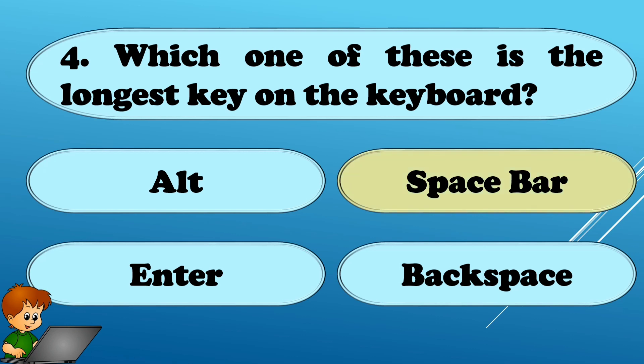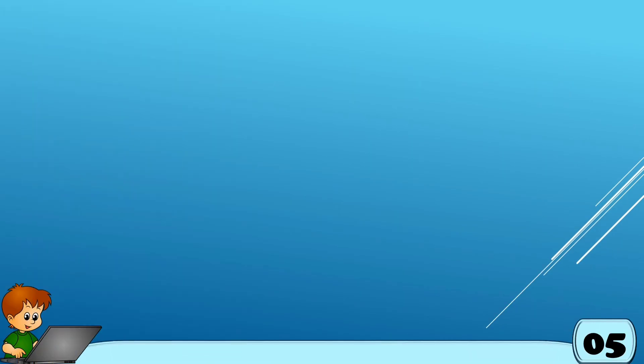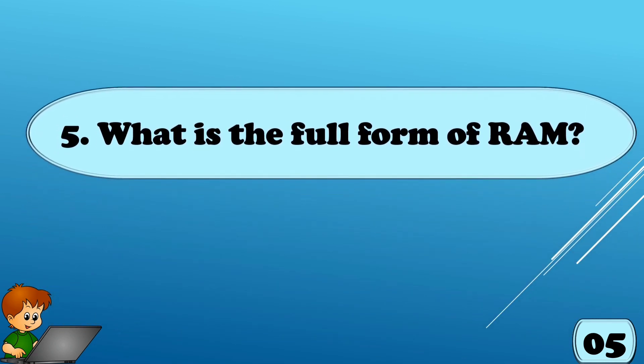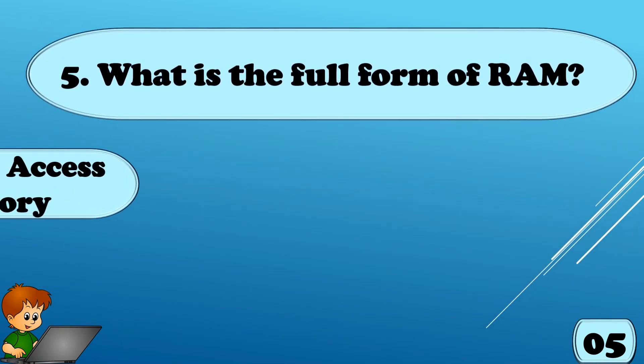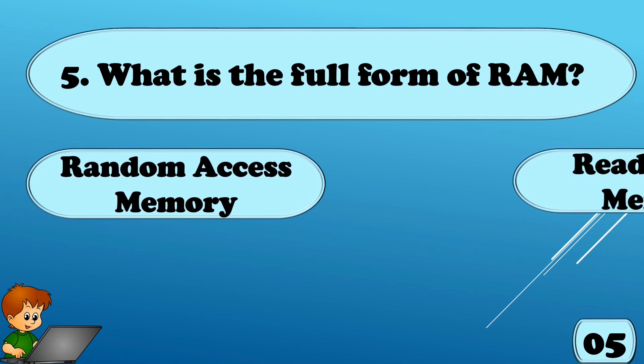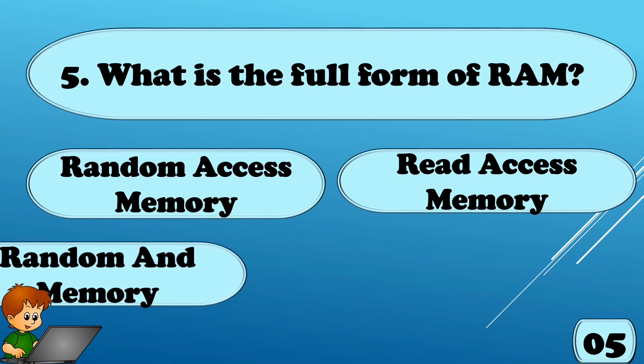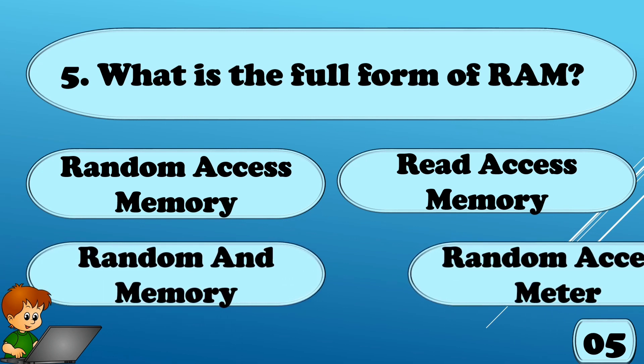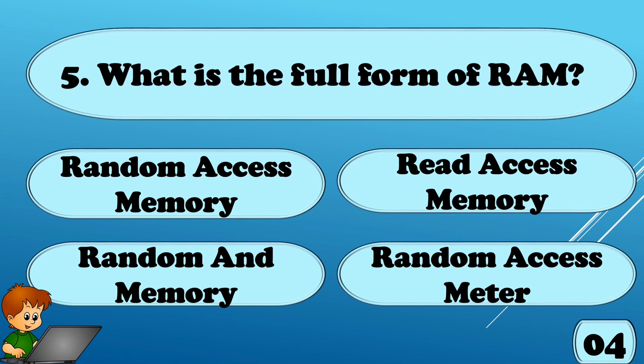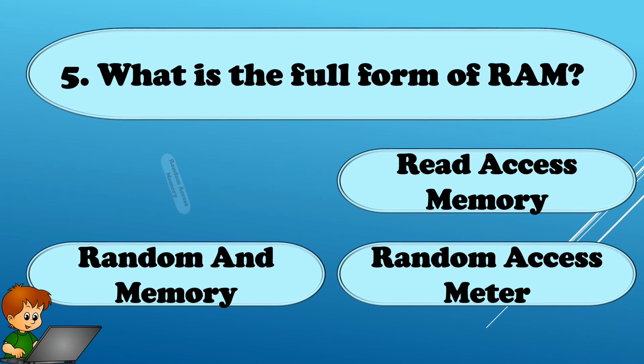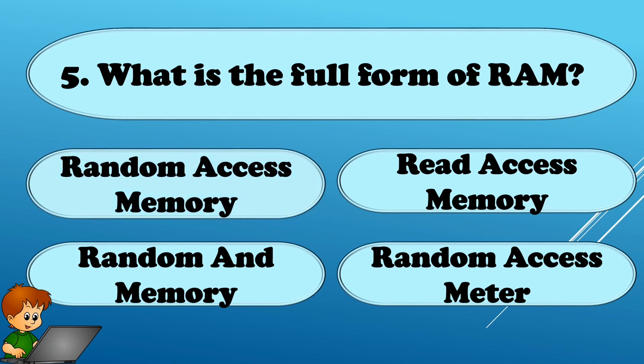What is the full form of RAM? Options are A. Random Access Memory, Option B. Read Access Memory, Option C. Random and Memory, Option D. Random Access Meter. The correct answer is Random Access Memory.